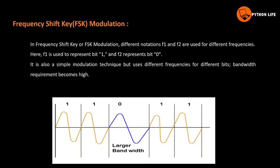In Frequency Shift Keying (FSK) modulation, different notations F1 and F2 are used for different frequencies. F1 is represented by bit 1 and F2 is represented by bit 0. It is also a simple modulation technique, but it uses different frequencies for different bits, so bandwidth requirement becomes high.